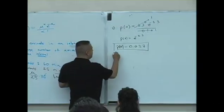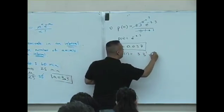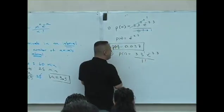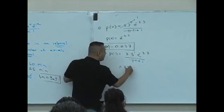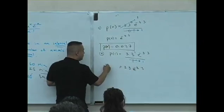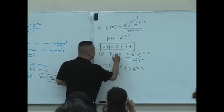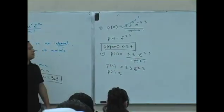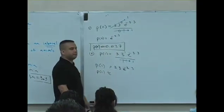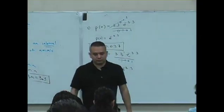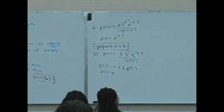All right. What about p of one? Question two. p of one is going to be 3.3 to the 1 e to the minus 3.3 over 1 factorial. So what happens now is that 1 factorial is a value 1. Anything to the first power is itself. So that's 3.3 now times e to the minus 3.3. That's our p of one. Now, what is this approximated to the nearest thousandths? These answers are approximates. Just simply multiply this value by 3.3. What do you guys get? What do you guys get?